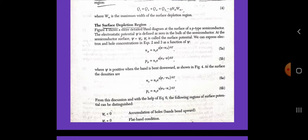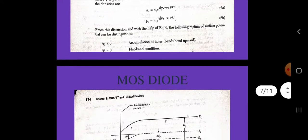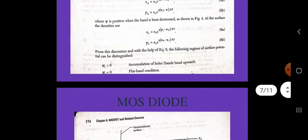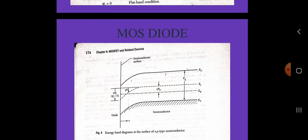From this discussion, with the help of the above equations, the following regions of surface potentials can be distinguished: when psi_s is less than zero, accumulation of holes — bands bent upwards; psi_s equals zero, flat band condition; psi_B greater than psi_s greater than zero, depletion of holes — bands bent downward; when psi_s equals psi_B, this is called the mid-gap condition with ns equals ps equals ni (intrinsic concentration); psi_s greater than psi_B — inversion — bands bend downward.